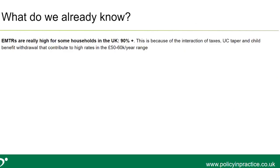What do we already know about effective marginal tax rates? We know they're really high in the UK for some households. Reports from Policy and Practice, IFS and others have found EMTRs of 90% or more for some household types — meaning you earn an extra pound and keep 10p or less. That's because of the interaction of taxes, the UC taper and the child benefit withdrawal, which particularly affects the earnings window of £50,000 to £60,000 a year. Researchers have described this as a 'disincentive desert' — a range of income where it makes no financial sense to work marginally more.